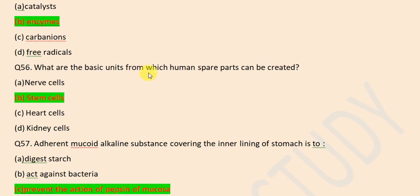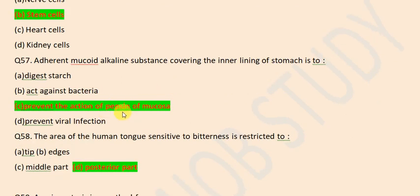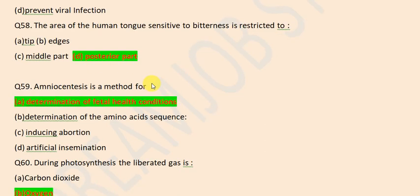Which are the basic units from which human spare parts can be created? Stem cells. Adherent mucular organic substance covering the inner lining of stomach is to prevent the action of pepsin of mucosa.